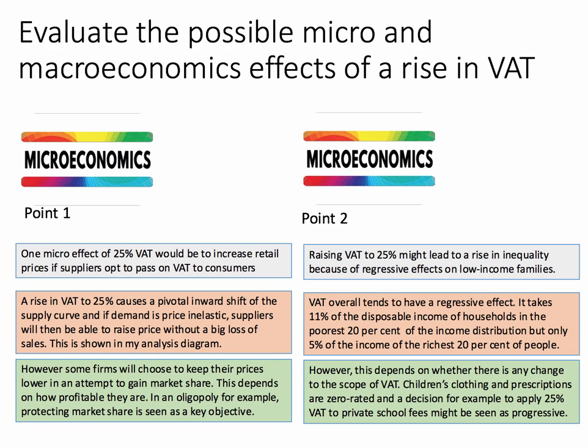Here are two points on the micro side — the possible microeconomic effects. First point: one micro effect of 25% VAT would be to increase the cost of living. Retail prices would go up, particularly if suppliers opt to pass on VAT to consumers. An increase in VAT from 20% to 25% — it's an ad valorem tax — so that's going to cause a pivotal inward shift of the supply curve. If demand is price inelastic, with elasticity less than one, suppliers will be able to pass on most of the increase in VAT without a big loss of sales. This is shown in the analysis diagram.